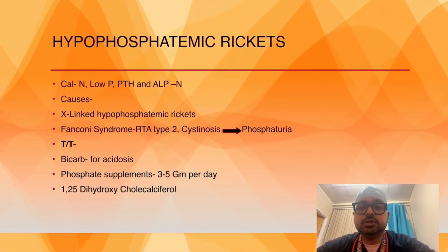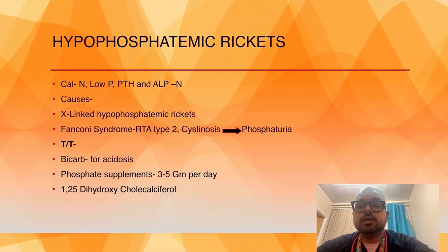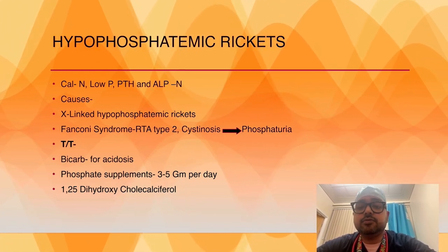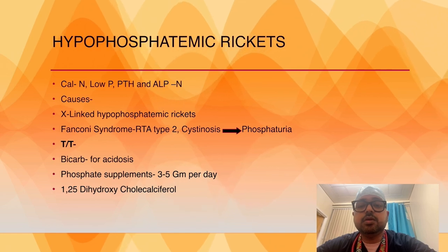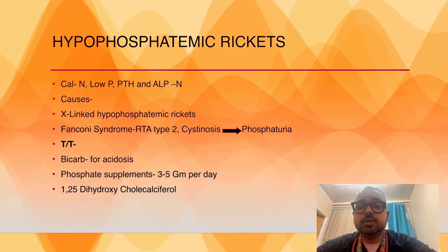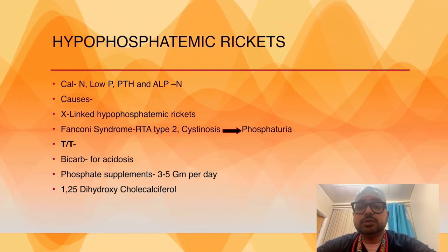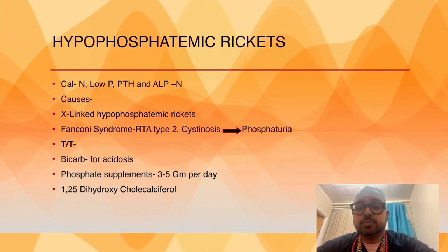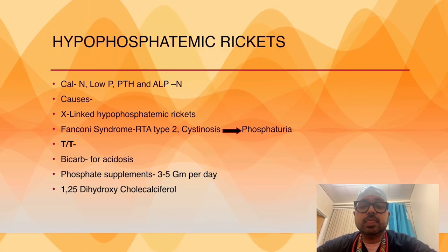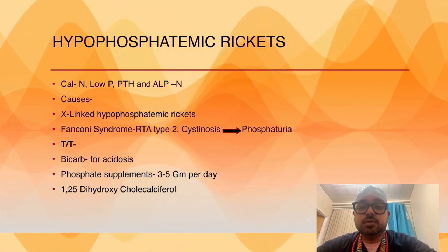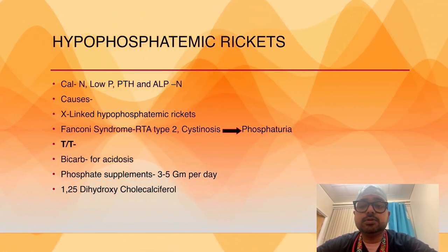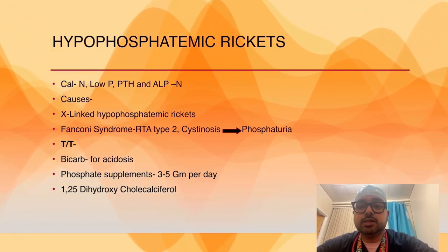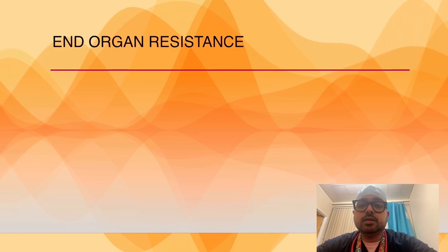Second variety: hypophosphatemic rickets, which is associated with normal calcium level, low phosphate level, and normal parathyroid and alkaline phosphatase levels. Causes: X-linked hypophosphatemic rickets or phosphate-losing syndromes like Fanconi syndrome, renal tubular acidosis type 2, or cystinosis. Treatment: bicarbonate for treatment of acidosis, phosphorus supplements 3 to 5 grams per day with 1,25-dihydroxycholecalciferol.